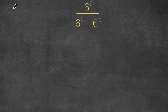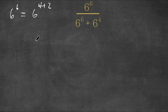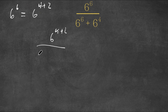Now 6 to the power of 6, this is the same thing as 6 to the power of 4 plus 2. So now I'm going to rewrite this as 6 to the power of 4 plus 2, divided by 6 to the power of 4 plus 2, plus 6 to the power of 4.